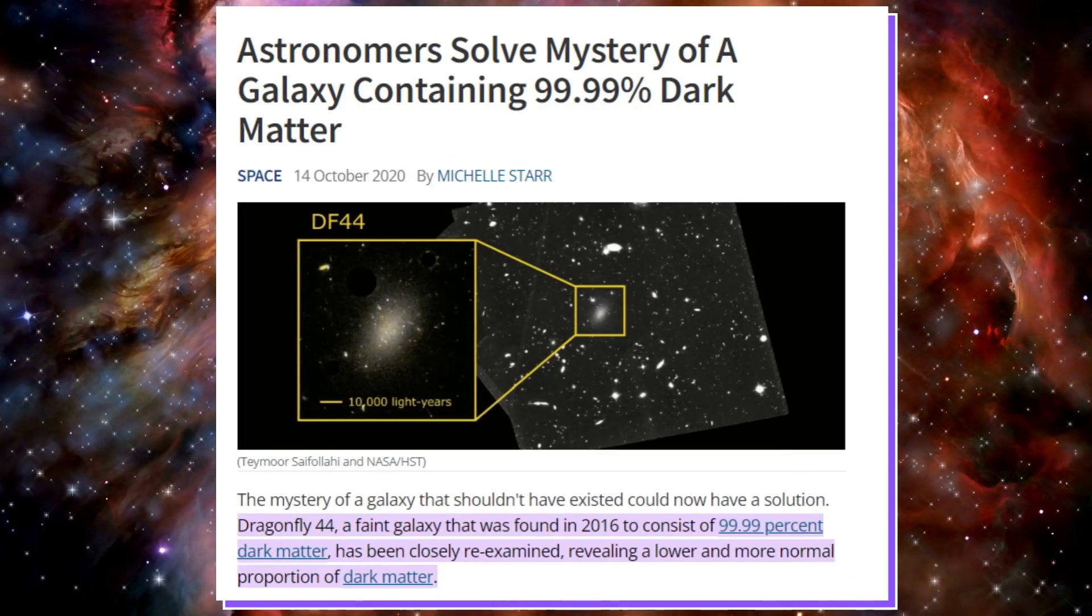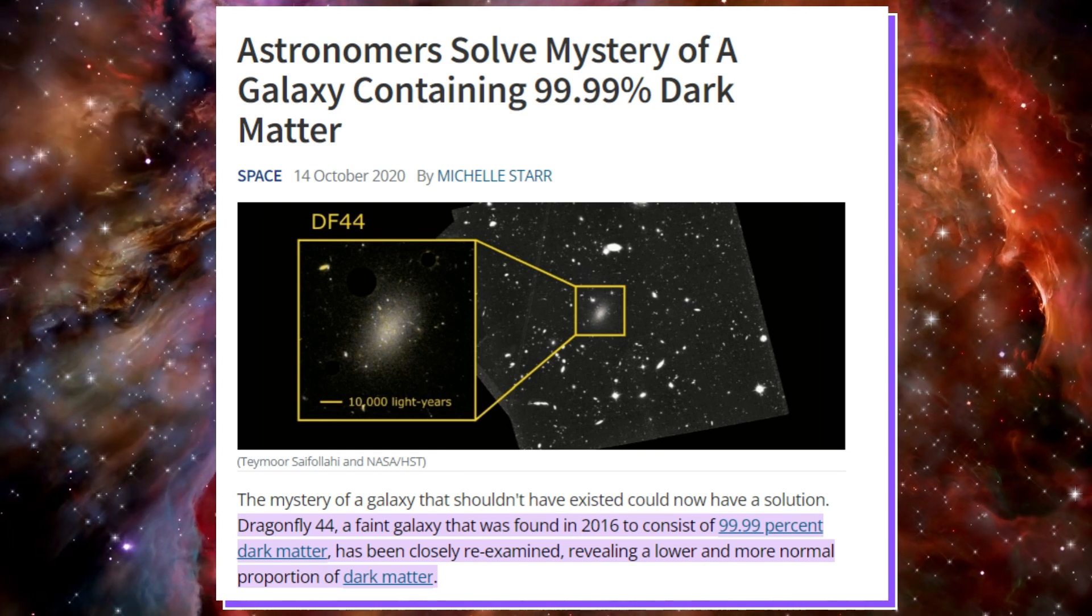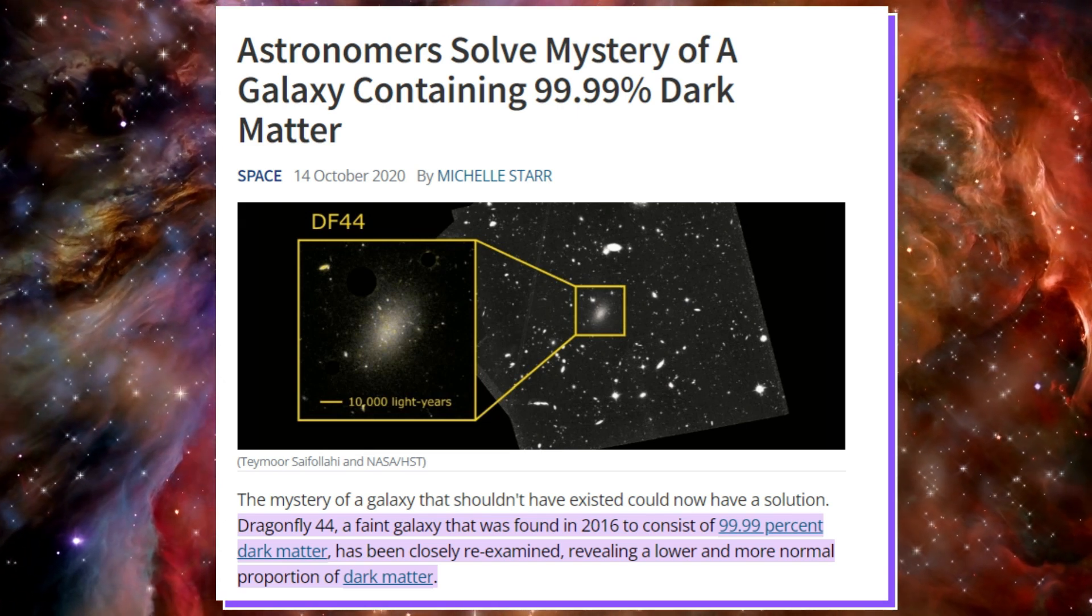The Dragonfly 44 galaxy is made up of 99.99% dark matter, and scientists are baffled by how it formed. This strange galaxy could provide new insight into the nature of dark matter and the universe, as far as we know.